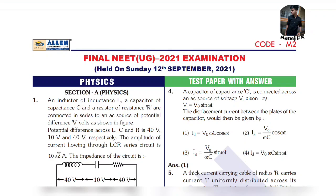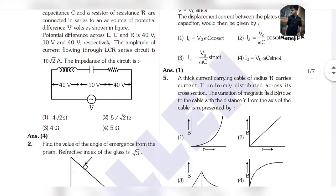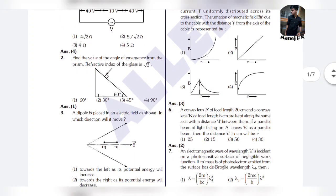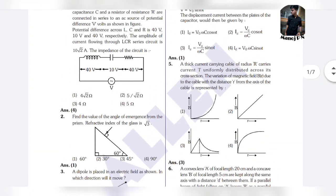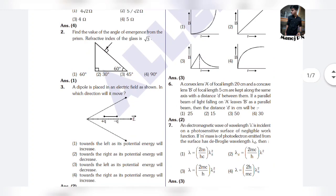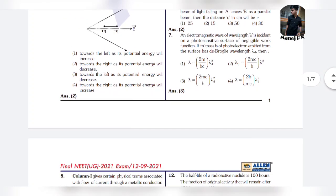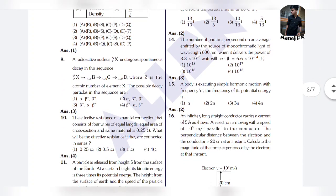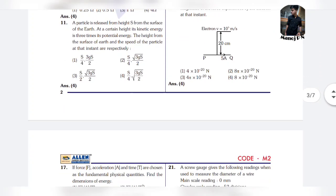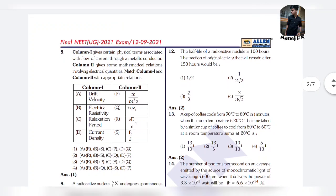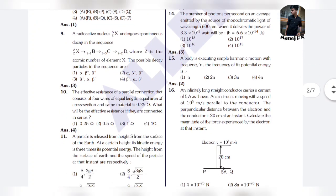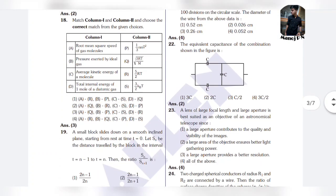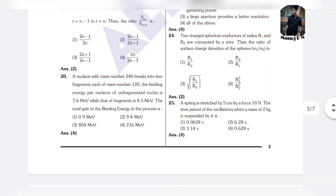Our first exam is in physics. First one is option 4, second option 1, third one is option 2, fourth option 1, fifth option 3, sixth option 2, seventh one is 3. Eighth one is 1, ninth one is 3, 10th is 4, 11th is 4, 12th is 2, 13th is 2, 14th is 3, 15th is 2, 16th is 4, 17th is 2, 18th is 3, 19th is 2, 20th is 4.